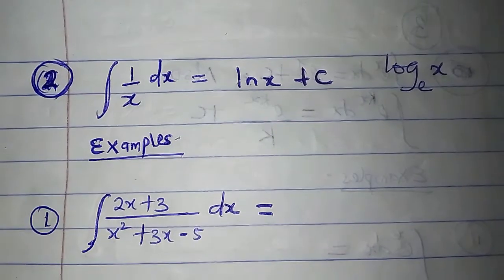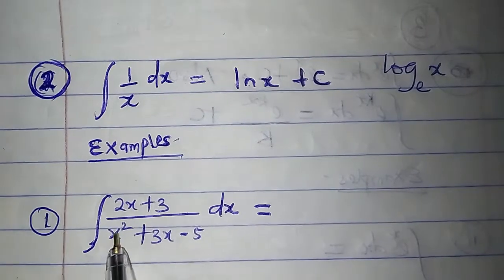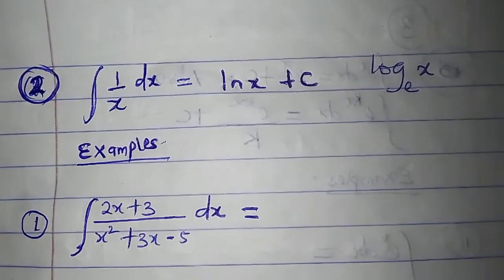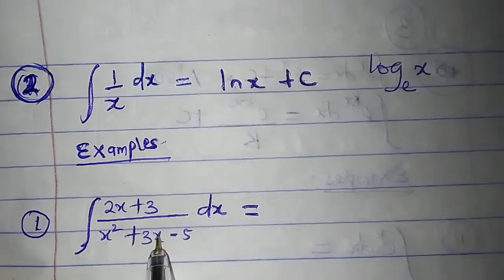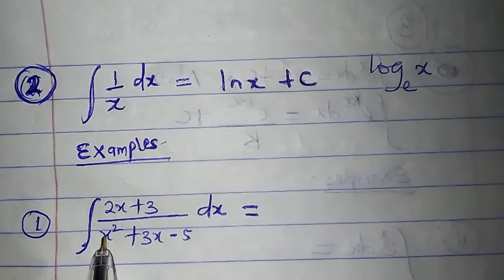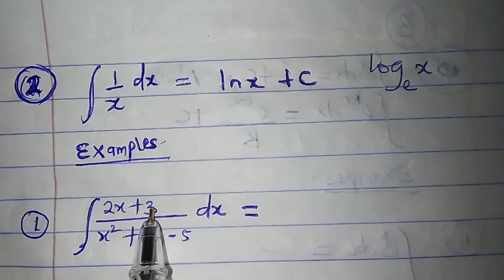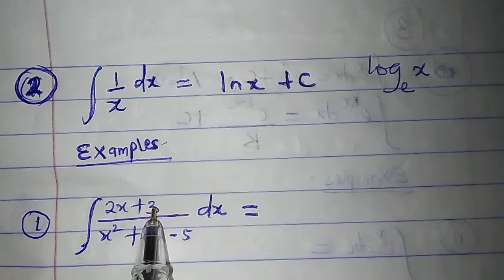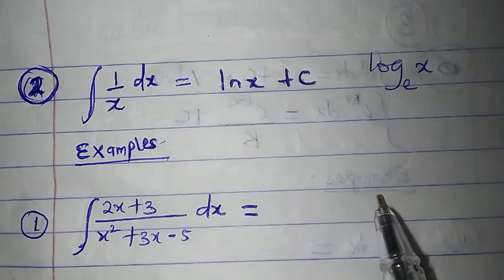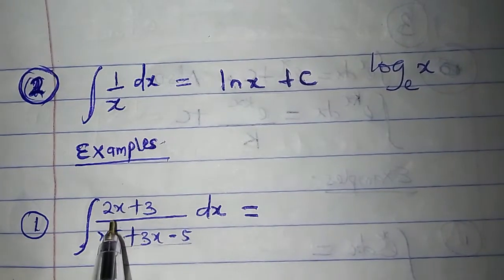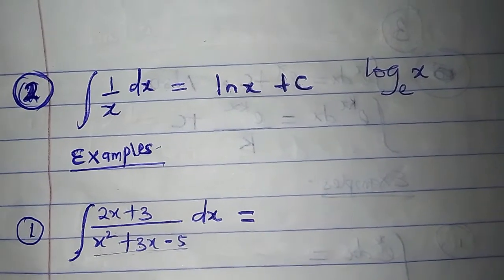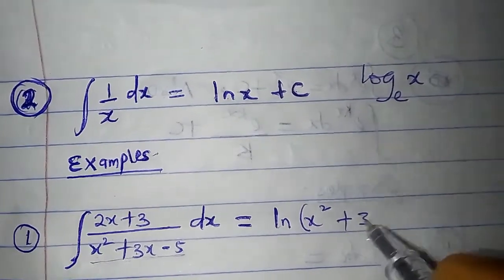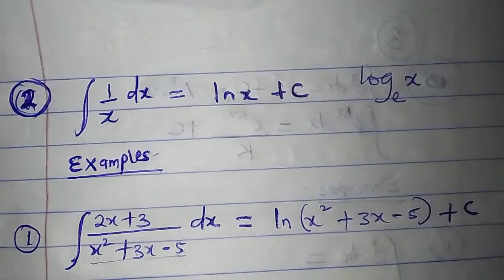Question 1: What is the integral of 2x plus 3 all over x squared plus 3x minus 5 dx? The denominator is x squared plus 3x minus 5. If I differentiate it: differentiate x squared gives 2x, differentiate 3x gives 3, differentiate minus 5 gives 0. So the derivative of the denominator is 2x plus 3, which is exactly the numerator. Therefore the integral is ln of x squared plus 3x minus 5, plus the arbitrary constant c.